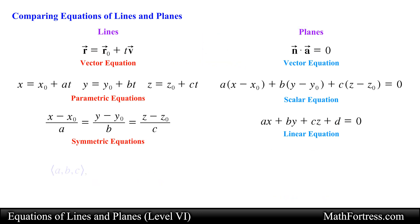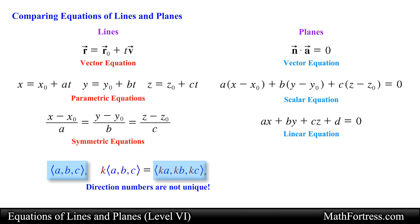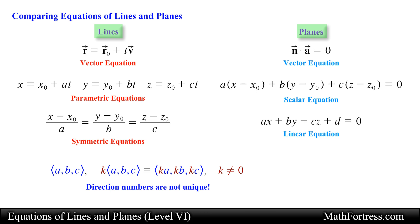Keep in mind that the direction numbers a, b, and c for a line or plane are not unique. If a, b, and c are a set of direction numbers for a line or plane, then ka, kb, and kc — where k is a non-zero real number — is also a set of direction numbers for that line or plane. This means that the equations of lines and planes are not unique. Also, the initial point x0, y0, z0 is not unique either; there are infinite choices for this initial point for both a line and plane in space.